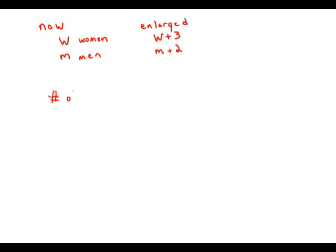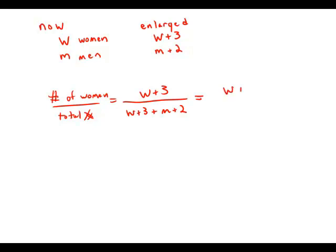Well, that probability is going to be the number of women over the total number. So the number of women over the total number, that's going to be W plus three divided by the total number W plus three plus M plus two. And I'm just going to simplify that denominator a bit. We have W plus three over M plus W plus three plus two equals five.